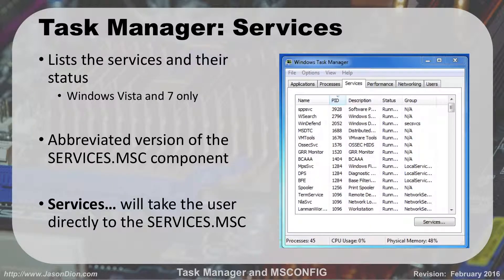The third tab is Services. Services are the background programs that run in the background of the operating system — we talked about those in the last lecture. This tab lists services and their status, and it only appears in Windows Vista and 7; in XP there is no Services tab. It's an abbreviated version of the Services component. You can see what's running and what's stopped, but you can't start or stop things from here. To do that, click the Services button in the bottom corner to open the full Services component.